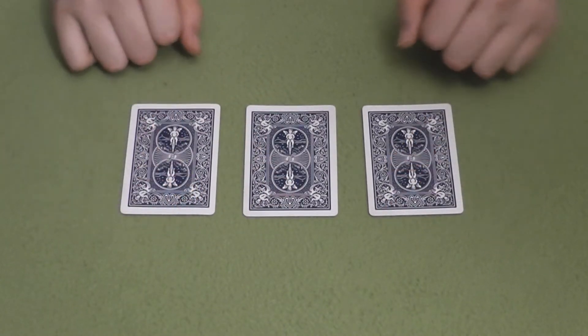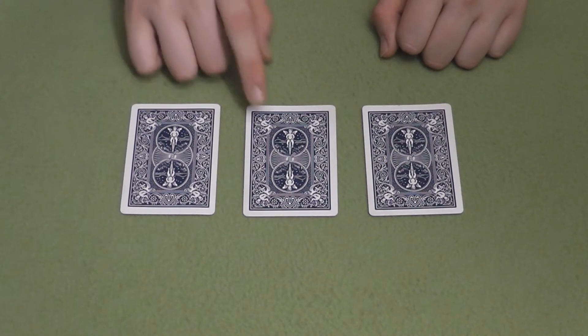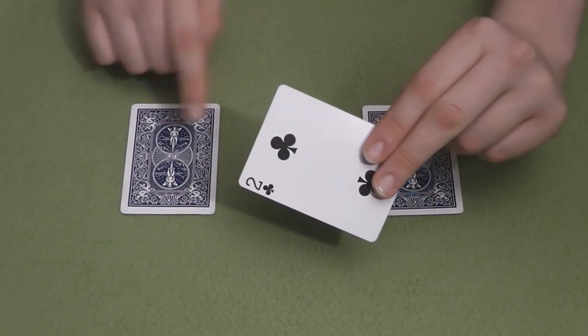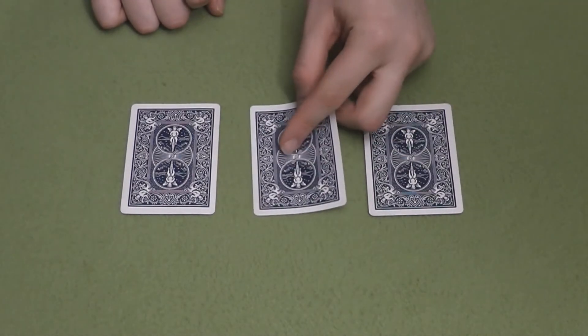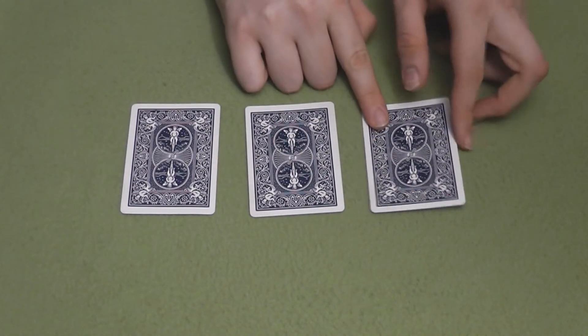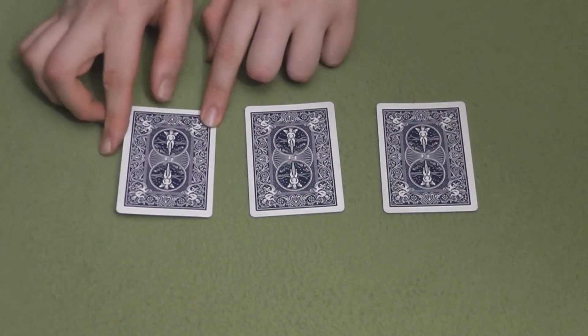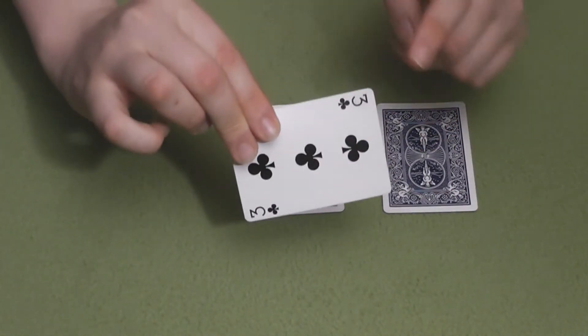Where's the Ace now? You bet it's back in the middle. Nope, wrong. It's the two, of course. You must have been distracted by that three again. The Ace is on the right, and the three is on the left.